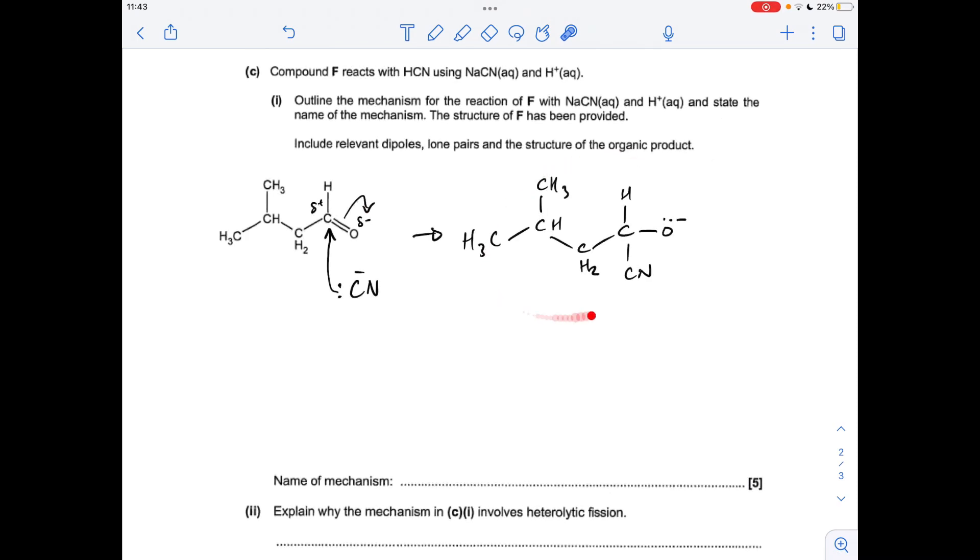That's going to generate this intermediate here, and then we bring an H plus ion into play from the HCN, and we take a curly arrow from the lone pair on the O minus, and get that H plus bonded. So the organic product is going to look like that.